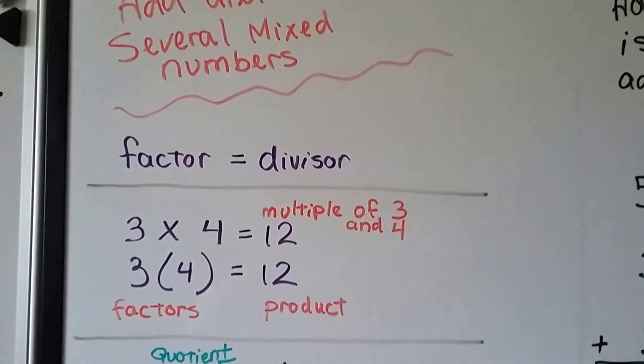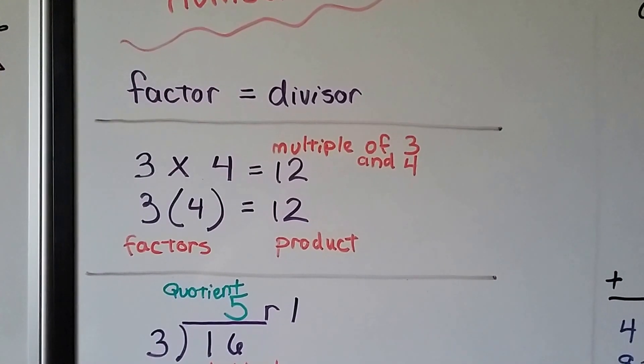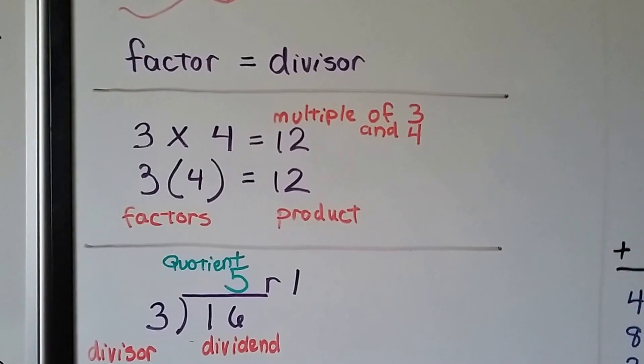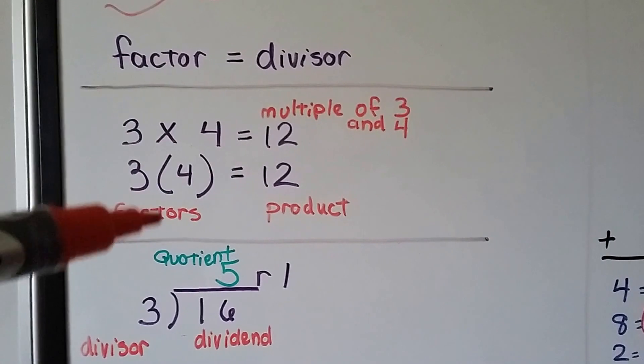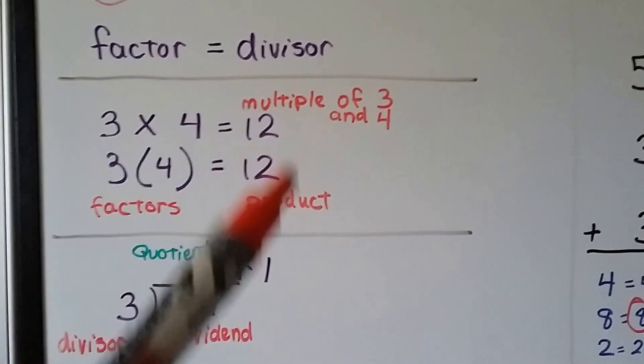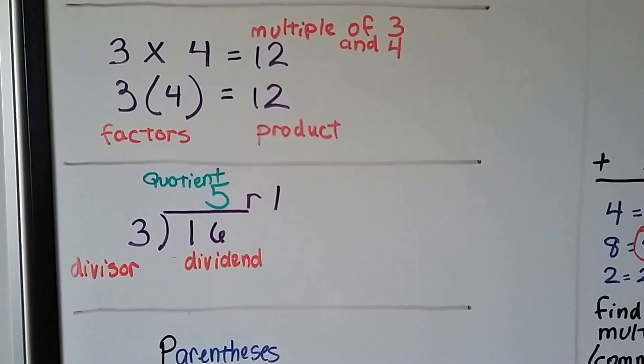So I want to go over some things very quickly, just to remind you that a factor is the same thing as a divisor. And in a multiplication problem, these are our factors, the 3 and the 4. The 12 is our product. The 12 is a multiple of 3 and 4. It's also a multiple of 2 and 6.